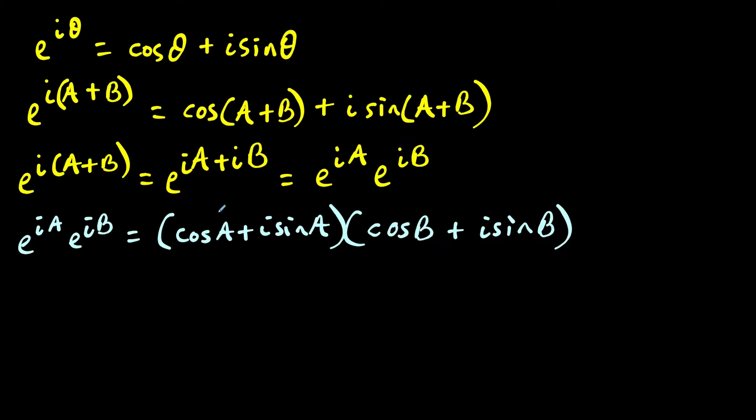And now here we just have to distribute. So we're going to have cosine a times cosine b, and then plus, I'm going to do things a little bit different here. Instead of distributing to the last term here, I'm going to distribute i sine a to i sine b. So I'll have i times i is i squared, and then we'll have sine a times sine b.